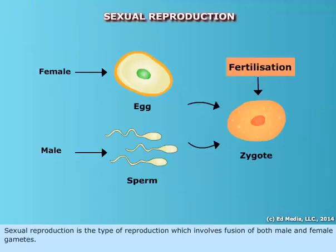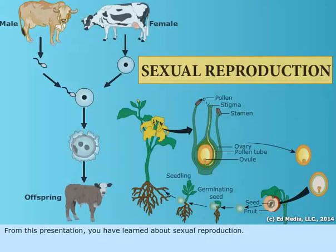Sexual reproduction is the type of reproduction which involves fusion of both male and female gametes. From this presentation, you have learned about sexual reproduction.